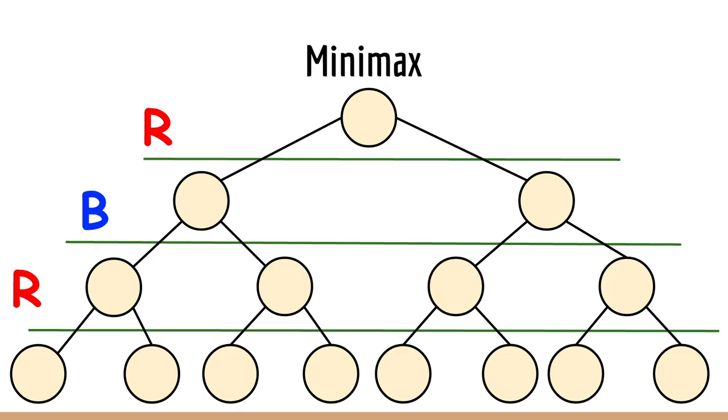So one example is chess where white and black are playing against each other. You have a number line, an integer line, and any integer which is positive is good for white, any integer which is negative is good for black. So positive infinity would be a win for white and negative infinity would be a loss for black and this is how the game tree comes out.